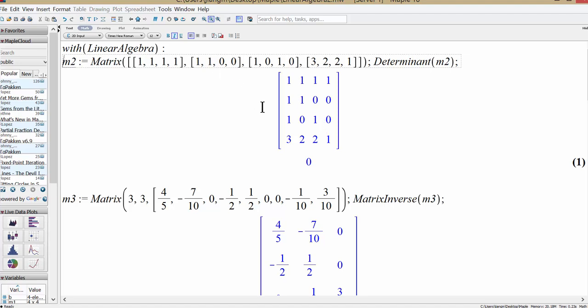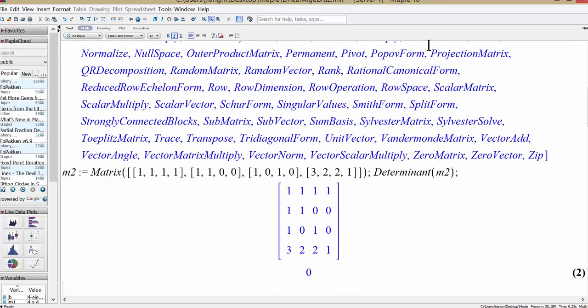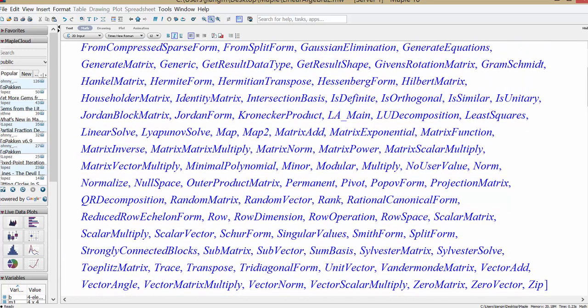Now you may ask what kind of commands Maple has we can use to do linear algebra. If you want to do that, you can change the colon over here to semicolon. So you move over there and backspace and change to semicolon. And this way, if you press enter again, you will see a list of commands you can use within this package. And there are a lot of them.